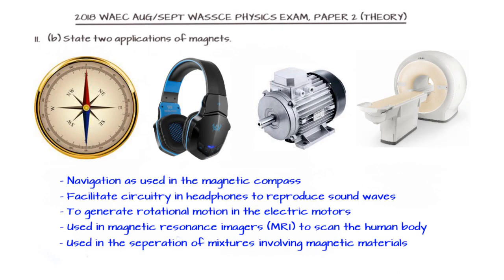We are asked to state two applications of magnets. Magnets find many applications in daily activities. The magnet is used in the magnetic compass for navigation, facilitates circuitry in headphones, is used to generate rotational motion in electric motors, is used in MRI to scan the human body, and can be used to separate mixtures.